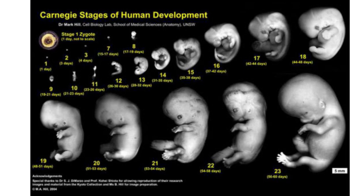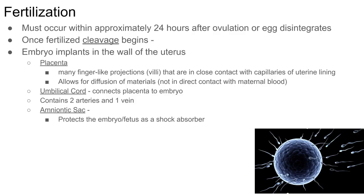The umbilical cord brings blood out to the placenta and back — the placenta is where exchange of materials between mother and fetus takes place. Here are stages of embryonic development from day one — a zygote when the egg was just fertilized — through about 60 days, roughly eight weeks. You can see it grows quite a bit in size. By around 10 weeks, organ systems are starting to form.